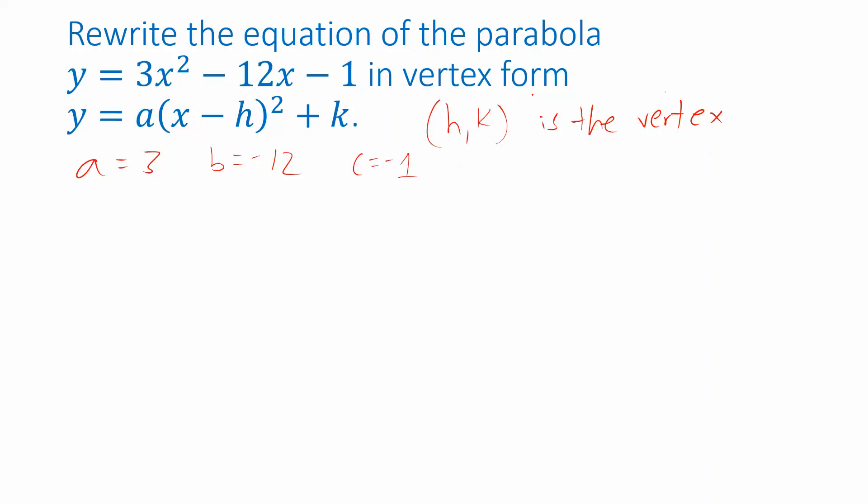I want to find the vertex. Well, h is the x-coordinate of the vertex, so I can use the -b / 2a formula to find that. b is -12, a is 3. -(-12) is positive 12, 2 times 3 is 6, 12 divided by 6 is 2.